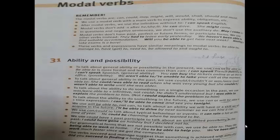To talk about the ability to do something on a single occasion in the past, we use 'was/were able to' plus infinitive. For example, 'I was able to explain the problem to him.' To talk about ability in the future, we use 'can' or 'will be able to'. We use 'will be able to', and not 'can', to talk about an ability we will have or a skill we will acquire in the future.